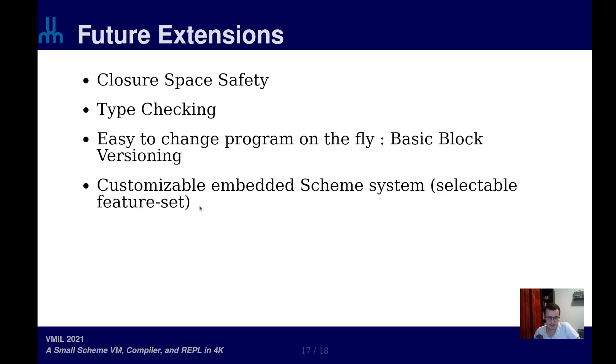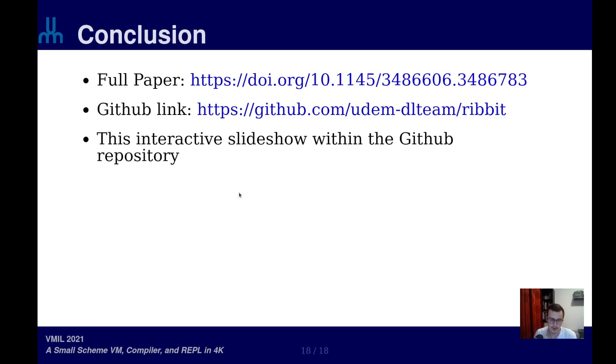The main idea behind the Ribbit Scheme is to have a customizable embeddable Scheme system where the programmer can select the trade-offs they want between performance, footprint, and memory usage. If you're interested in more, I invite you to check out the paper or explore the GitHub repository. Thank you.